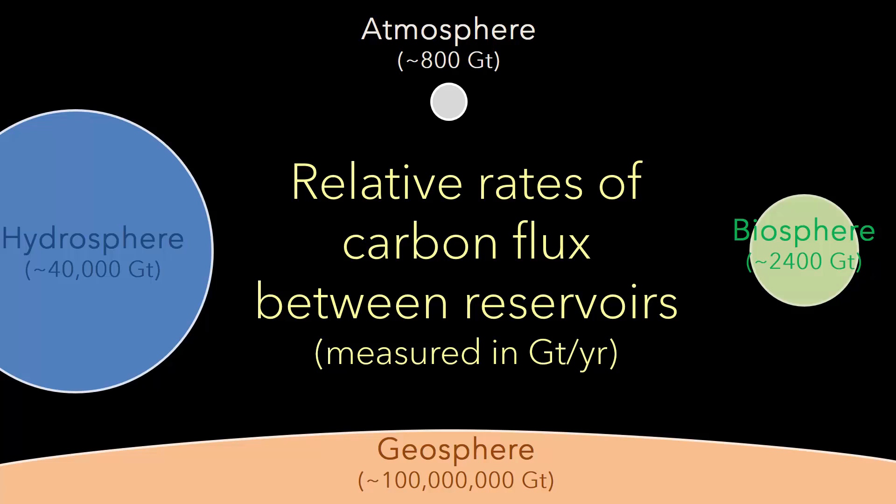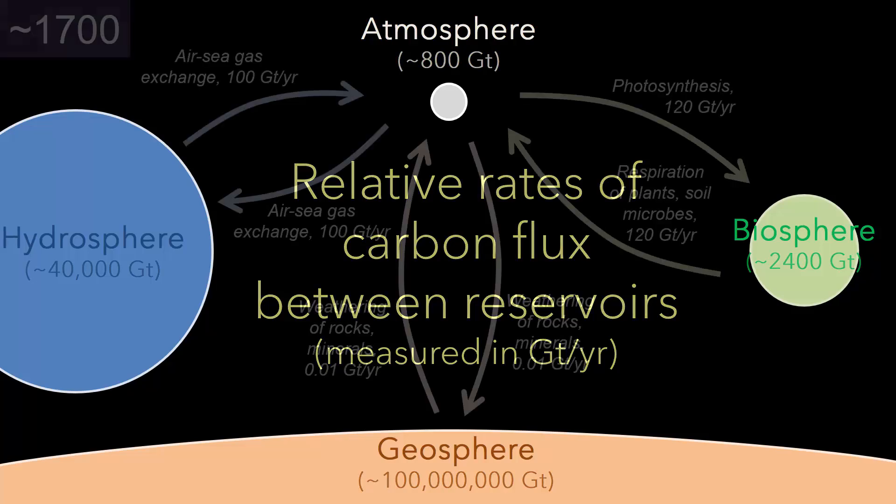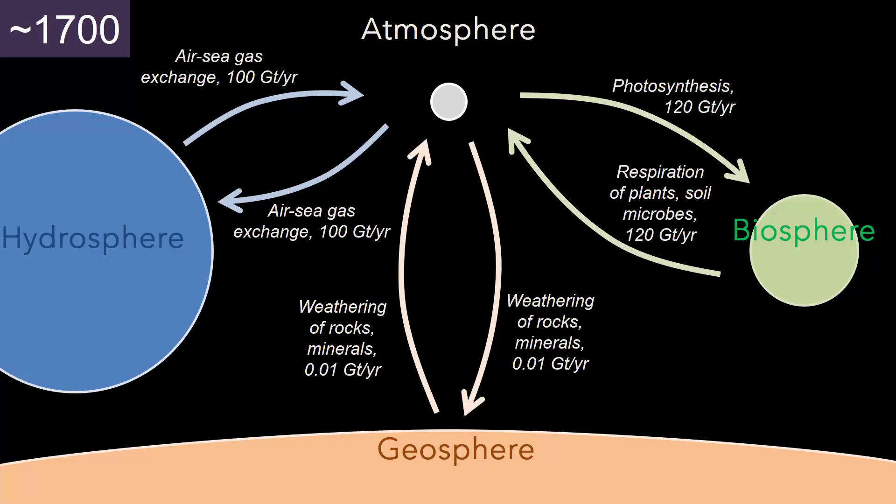It's only when human actions perturb this reservoir that it experiences more rapid flux. For example, up to a few hundred years ago, the flow of carbon among some of the system components would have looked something like this, with the carbon exchange between the different spheres being relatively similar.